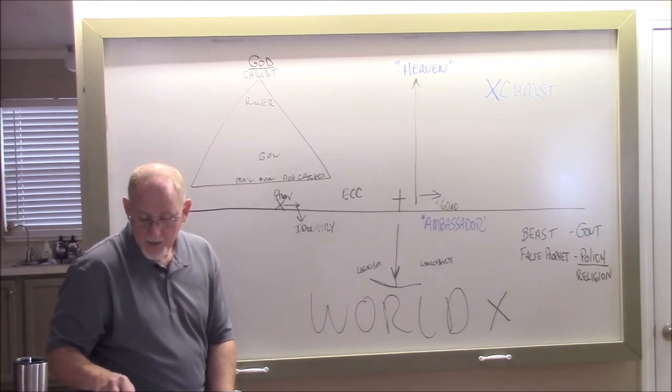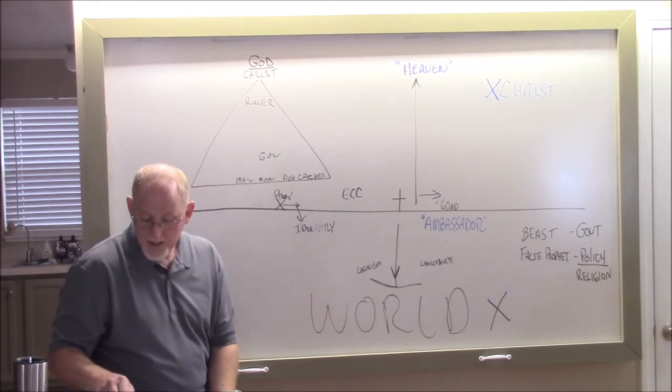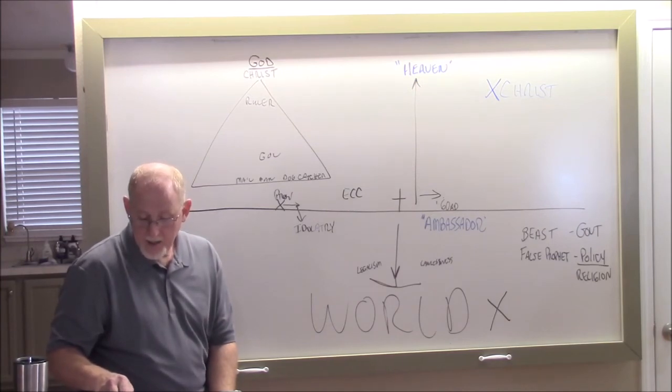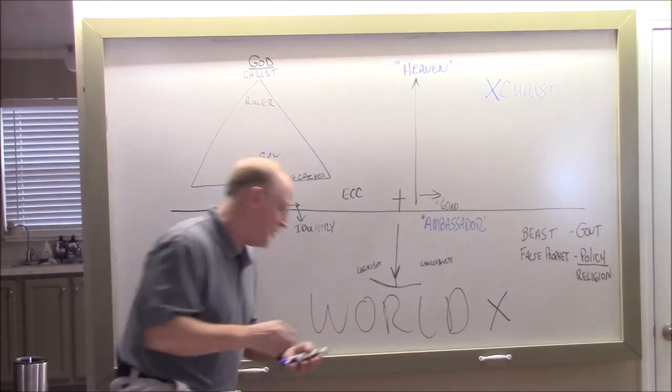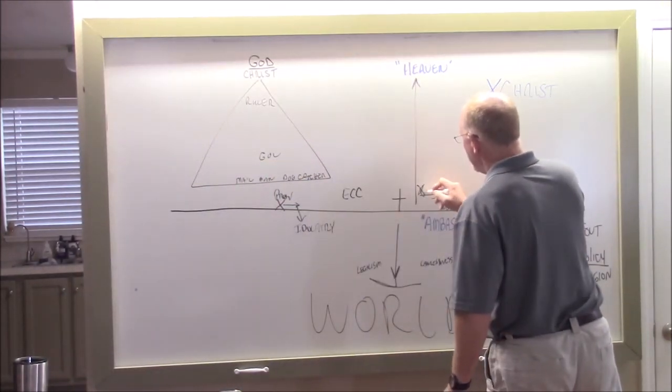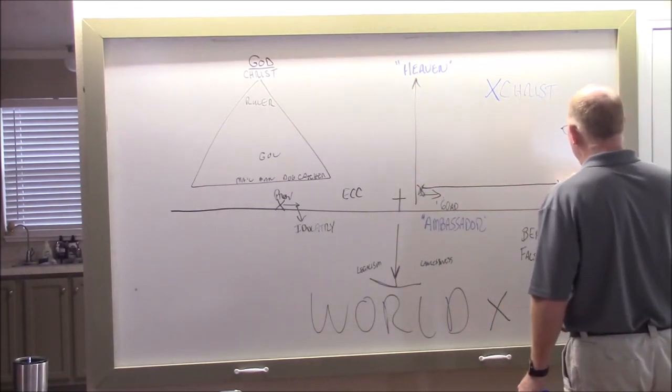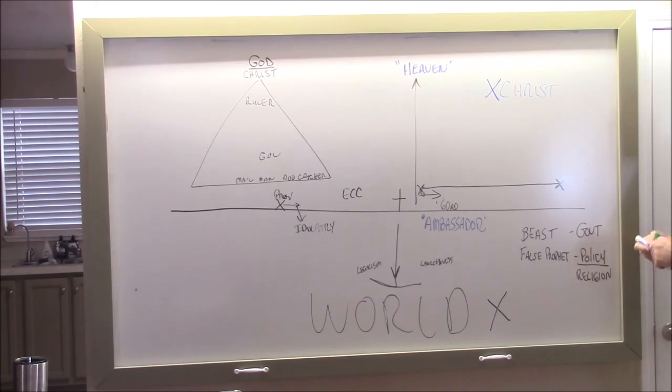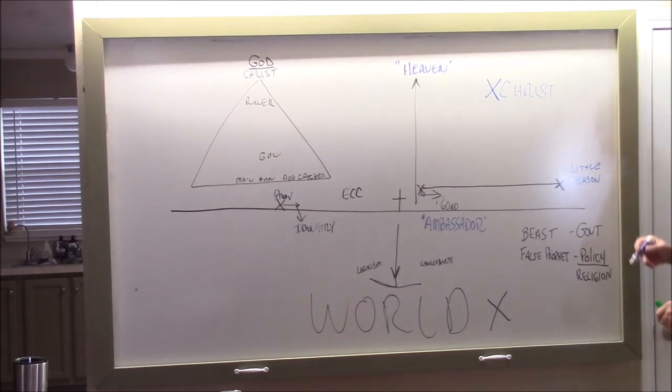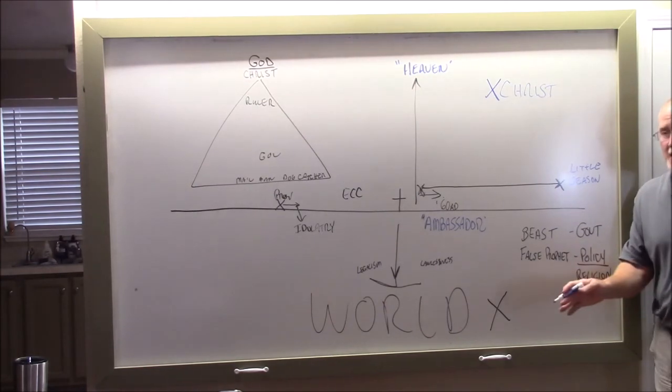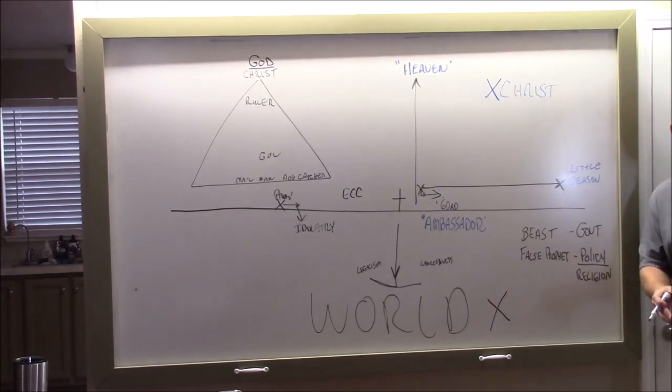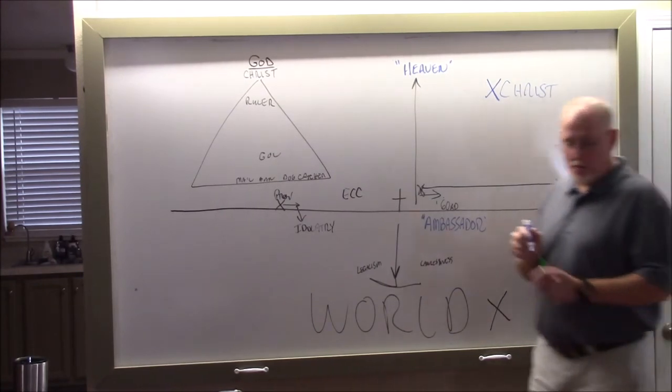therefore rejoice, ye heavens, and ye that dwell in him. Woe to the inhabitants of the earth and of the sea, the lost people. For the devil has come down unto you having great wrath because he knoweth that he hath but a short time. Remember, we talked when we went through Revelation. He's bound back here and for a long season God keeps him bound, doesn't he? But then what does he do right at the end? He takes the binders off and he looses him for that little season. And in that little season, what does he do? He deceives in a way he's never done before. There's rebellion. There's the worst form of government that's ever going to exist. And I'm sorry to tell y'all, guess where we live? We live in the little season. Watch what he does.